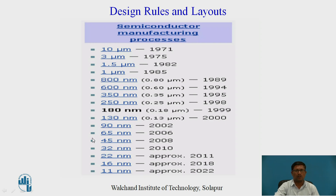This shows the history of the VLSI industry's design rules and layout in the manufacturing processes of semiconductor and CMOS circuits. In 1971 the scale was 10 micrometers; in 1975 it was reduced to 3 micrometers. In 2022 it reached 11 nanometers — the size of the technology reduces day by day.